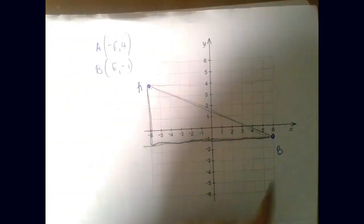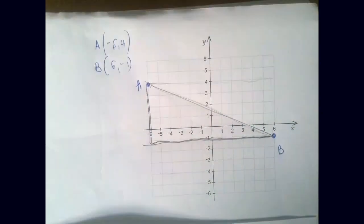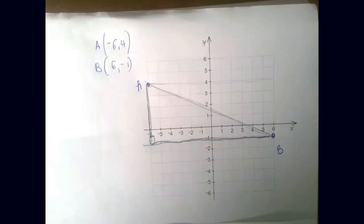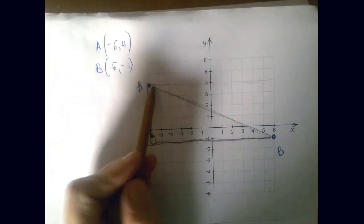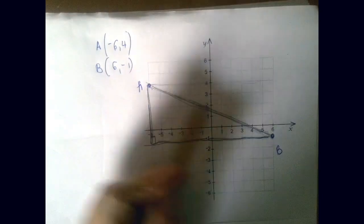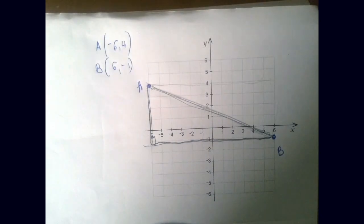Now that we have a right triangle, we're going to be able to find the hypotenuse by using the Pythagorean theorem, but first we have to find the shorter sides.